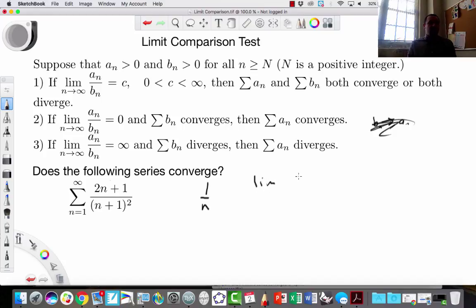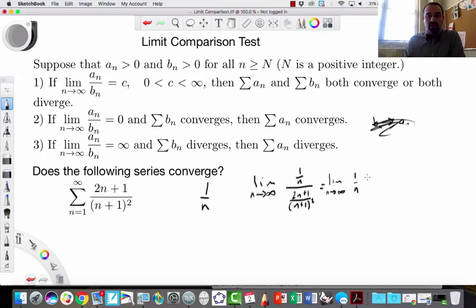So we're going to take the limit of, it doesn't matter which one we put on top or the bottom, 1 over n divided by 2n plus 1 divided by n plus 1 squared, as n goes to infinity. And we know how this one behaves. If we can show that these two are going to be pretty much the same, then we can show that these two functions, these two series behave the same way. It takes a little bit of doing here, but we can do it. The limit as n goes to infinity of, we're going to have 1 over n times, and we get n plus 1 squared over 2n plus 1. So we can do a little bit of simplification here, the limit as n goes to infinity.